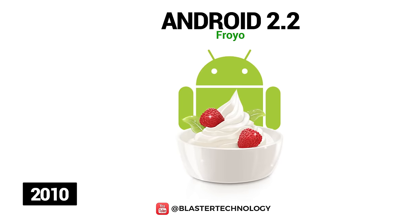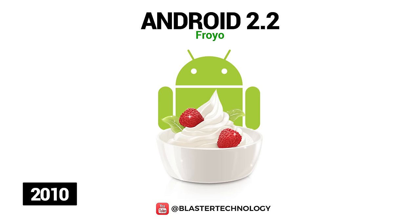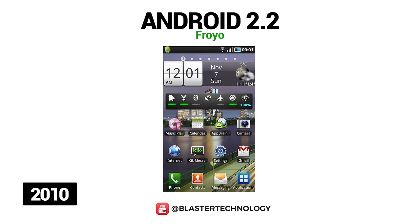Android 2.2 Froyo was launched in 2010, and the phones that came with this version had several new features, such as mobile Wi-Fi hotspots, push notifications via Android Cloud to Device Messaging, and the ability to lock the phone with a PIN.